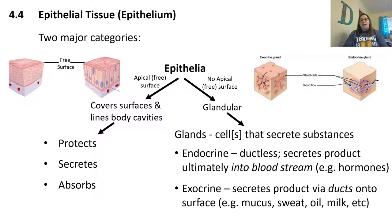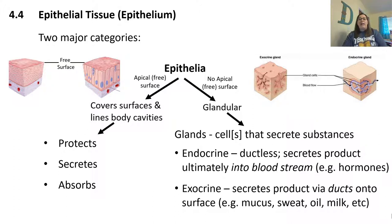There are two types of glands. Endocrine glands are important for the endocrine system — they are ductless and secrete hormones into the bloodstream. Exocrine glands secrete products via ducts onto the surface, releasing things like sweat, mucus, oil, and milk. Endocrine glands do not have that duct system; they release their content straight toward the bloodstream.